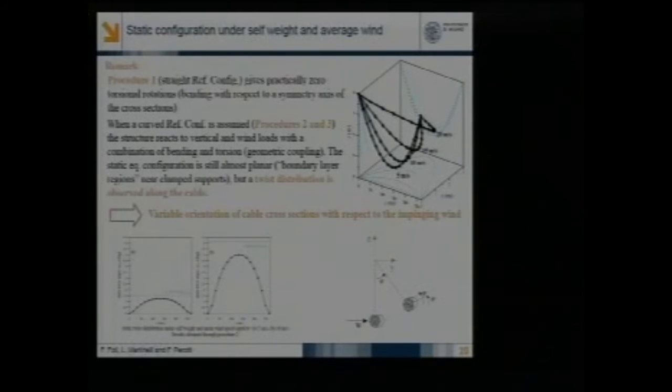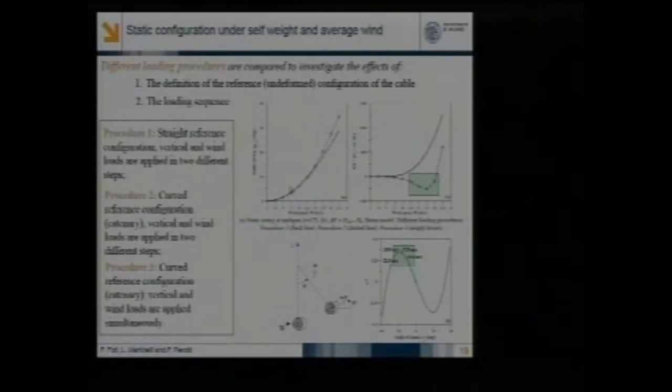The principal difference between the two configurations is due to the different orientation of the cross-sections in the final configuration. Both procedures deliver results which are very similar in terms of displacements. In particular, the cable undergoes a rotation and, except for two boundary layer regions near the clamps, belongs to a planar configuration. But in the first case, the structure reacts essentially to a bending case with respect to a symmetry axis, so there is no significant rotation of the cross-section with respect to the impinging wind. In the other case, we have a rotation C with respect to the impinging wind which is zero at the clamps and then varies along the cables. More in detail, it's never equal to the static swing of the structure. This affects mainly the variation of the tension in the cable.